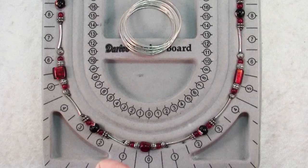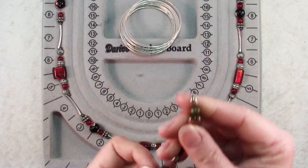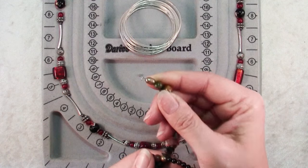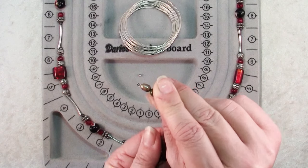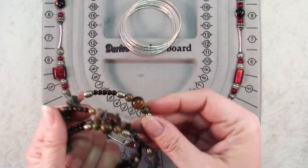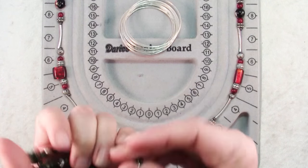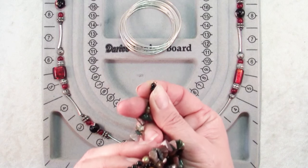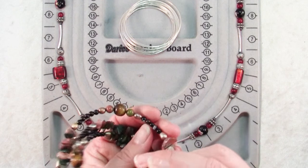Now in other memory wire bracelets I've shown you, we've just finished the ends with a loop. You just take your round nose pliers, bend the end of that wire with a loop and then your beads can't escape and you repeat on the other end to finish your bracelet. It's a nice finish, it's secure.